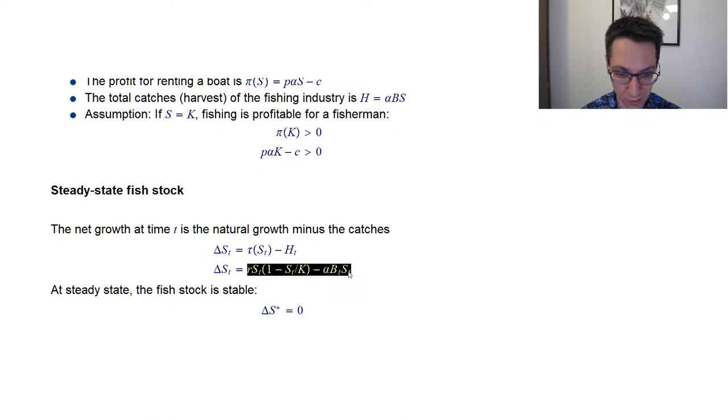So now we can just substitute what we have here. So r·s*·(1 - s*/K) has to be equal to α·B*·s*. And what's neat here is we get a nice cancellation because the number of fish in the ocean determines how many new fish are born every year. And the number of fish in the ocean determines the number of catches. So we can simply divide one by the other.